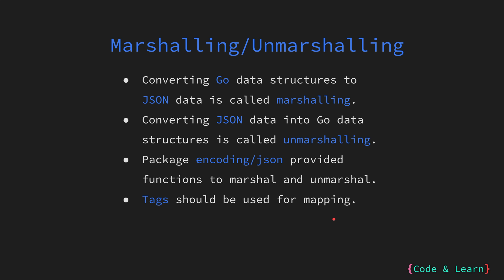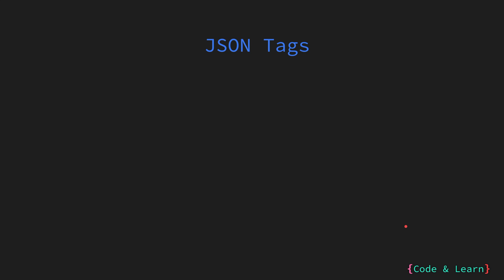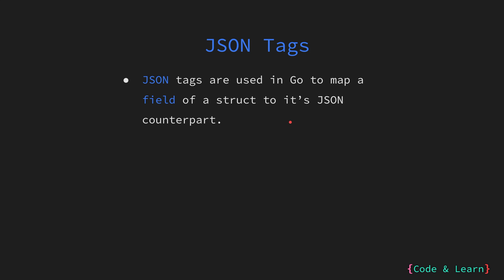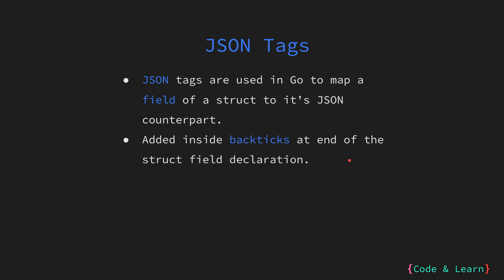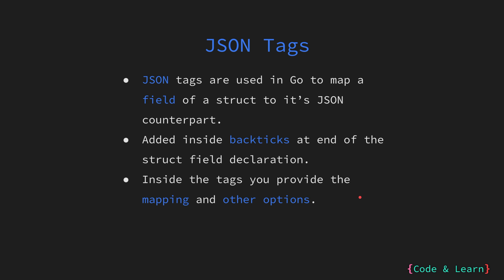Although Go provides support for automatically marshalling basic data types like strings, numbers, booleans, etc., it is highly advised to use JSON tags. JSON tags are used to map how struct fields are marshalled and unmarshalled, or to form a mapping between the struct field and the JSON data object field. JSON tags are added inside backticks to the end of the struct field declaration, on the same line. Inside the tag, you provide mapping to JSON field name and other options, provided in a comma-separated string.